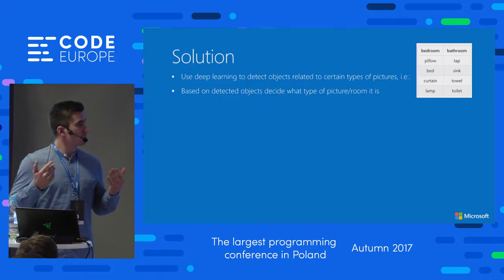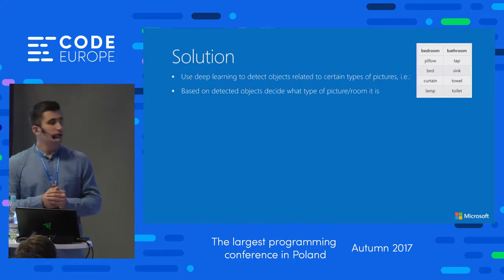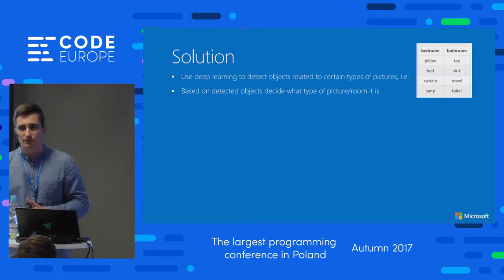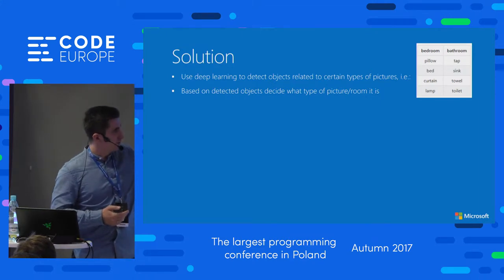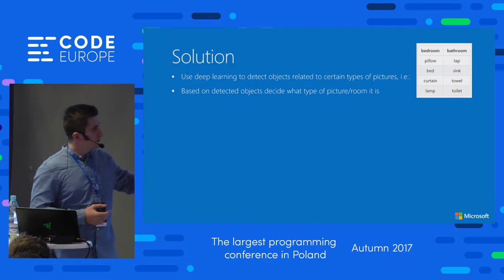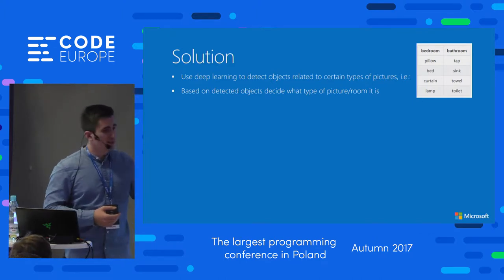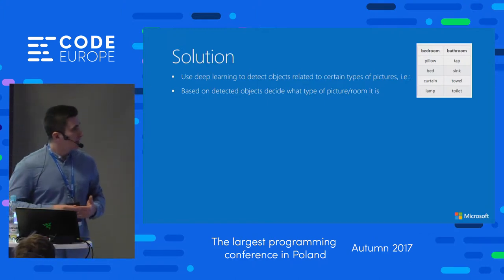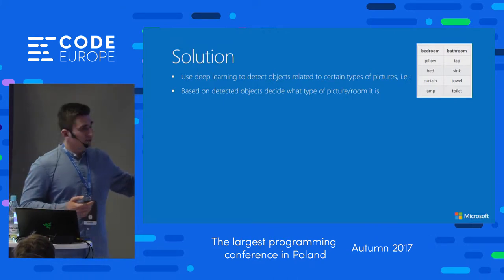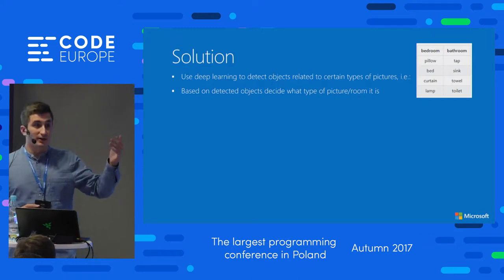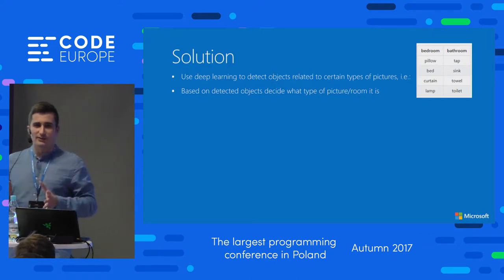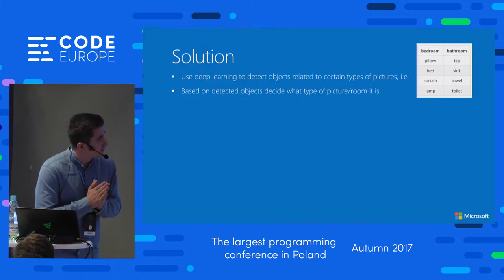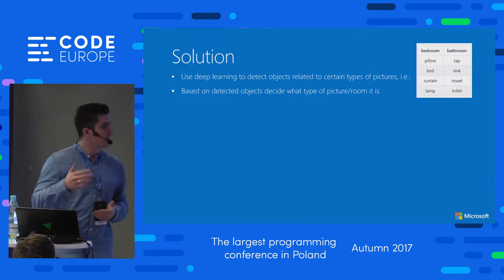We figured a solution involving object detection and classification using deep learning. For our POC we used bedroom and bathroom as examples, and for each room type we assigned objects strongly connected to it. For bedroom: pillow, bed, curtains. For bathroom: tap, sink, toilet, shower, and everything else.